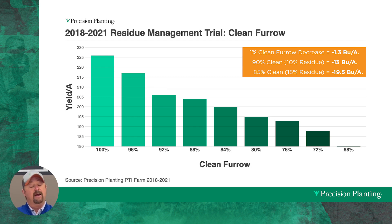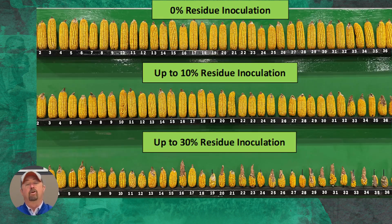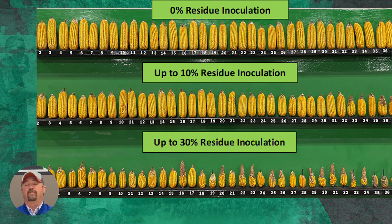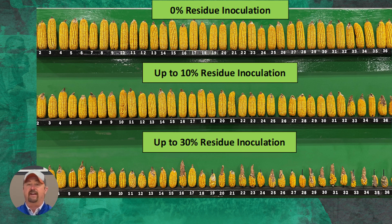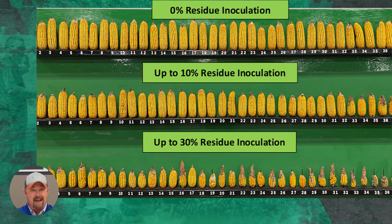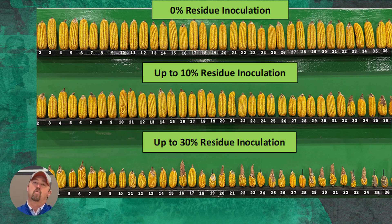So now we've got to figure out: how do we measure this? How do we know what's in the furrow and how do we fix it? Look at the earboard here. We've collected ears from our manual inoculation and we know there's a yield loss with this. Look at the top shelf of this earboard — this is where we've made sure there's no residue in the trench whatsoever. This is clean. Every kernel in the furrow doesn't have any old residue near it. Then we compare that to a 10% residue inoculation — that's the 90% clean furrow — and you can see the size of these corn ears diminish.